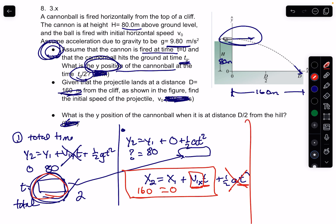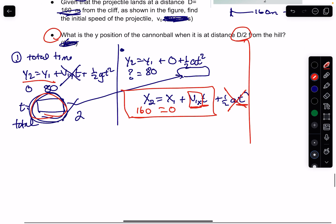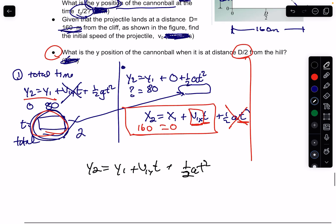And then the last question, question c or bullet 3. What is the y position of the cannonball when it is at a distance of d over 2? And so I plugged it into this same equation here, right? So I said y2 equals y1 plus v1yt plus 1 half at squared. These are the y's. And so y1 is, where are we going to?